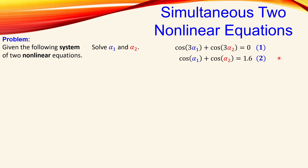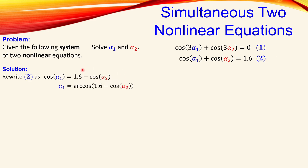To work out the solutions, we can rewrite equation 2 to isolate α₁. We can say cosine of α₁ equals 1.6 minus cosine of α₂, bringing that term to the right side. Then we take the inverse cosine of both sides, so α₁ is now isolated and equal to arccos(1.6 − cosine of α₂). We designate this as equation 3.